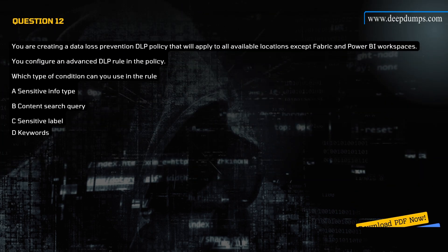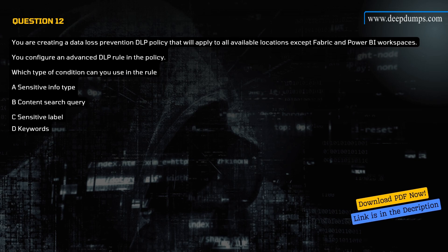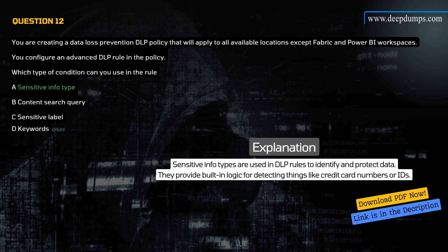Question 12. You are creating a DLP policy that will apply to all available locations except Fabric and Power BI workspaces. You configure an advanced DLP rule in the policy. Which type of condition can you use in the rule? A) Sensitive info type, B) Content search query, C) Sensitivity label, D) Keywords. Correct answer is A. Explanation: Sensitive info types are used in DLP rules to identify and protect data — they provide built-in logic for detecting things like credit card numbers or IDs.